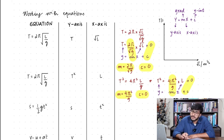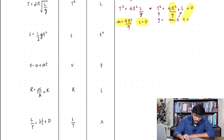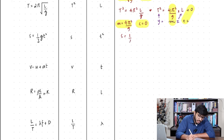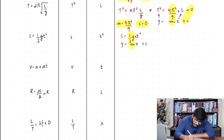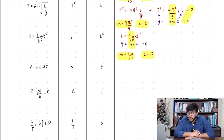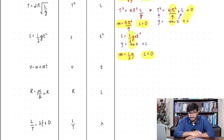Let's try the same skill on some other equations. We have s equals ½gt², and if you're plotting s on the y-axis against t² on the x-axis, this equation is already segregated. You can simply compare it with y equals mx plus c and see that ½g is equal to the gradient, with the y-intercept again being 0. The method is: separate the variable on the y and x-axis, then compare the equation with y equals mx plus c.